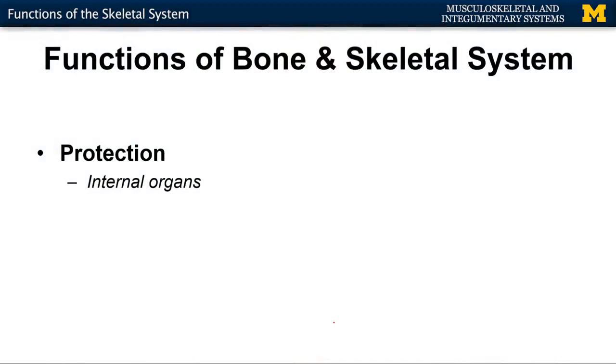Additionally, the skeleton is going to protect certain internal organs. The two main ones you think of: your skull — that calvaria or skull cap — protecting the brain, and your rib cage or thorax protecting your lungs as well as your heart. It's also important to think about areas where you don't have as much bone protection. If you think of your abdomen, you don't have any bones in the anterior part, so you have to have other structures serving to protect those areas.